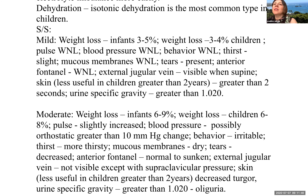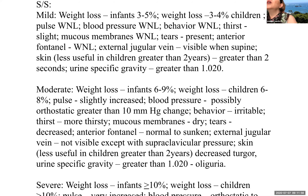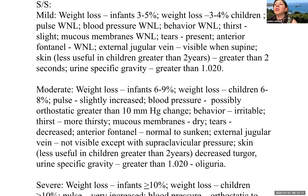The first problem we will discuss is dehydration. Isotonic dehydration is the most common type in children. Mild signs and symptoms include weight loss — for an infant, three to five percent; for a child, three to four percent. Pulse and blood pressure are within normal limits. Behavior is normal. They will be slightly more thirsty. Mucous membranes are within normal limits, tears are present, and the anterior fontanelle is within normal limits. Skin turgor is not an immediate recoil. Specific gravity will be greater than 1.020.